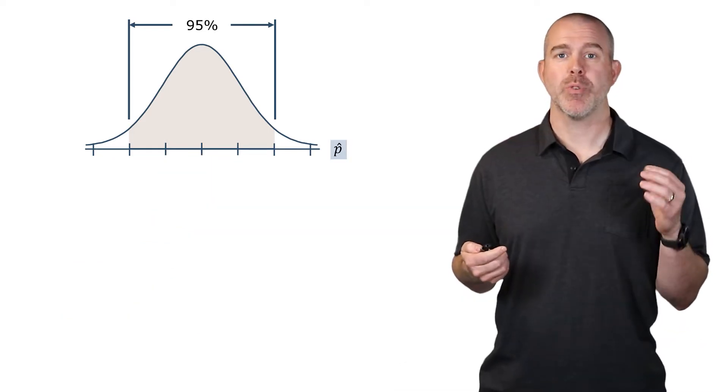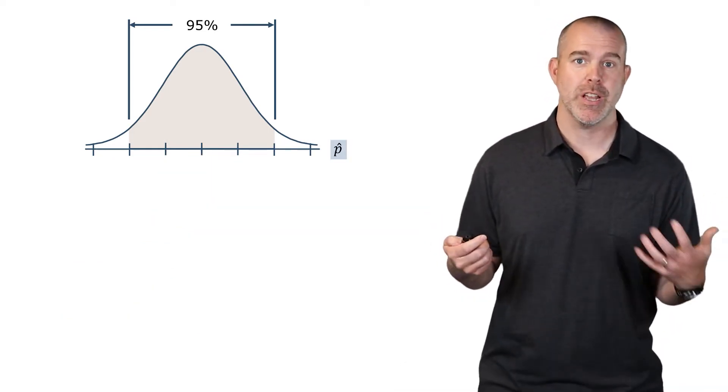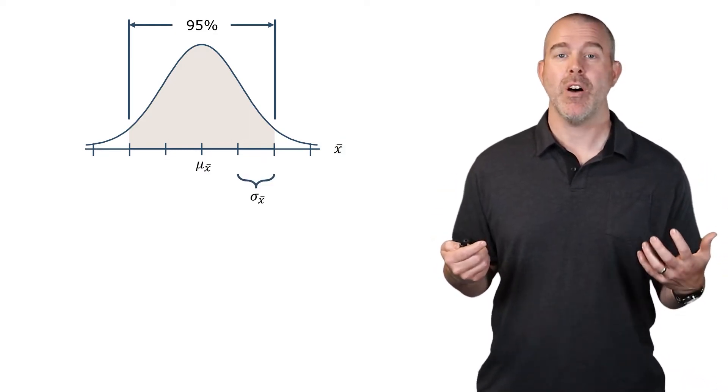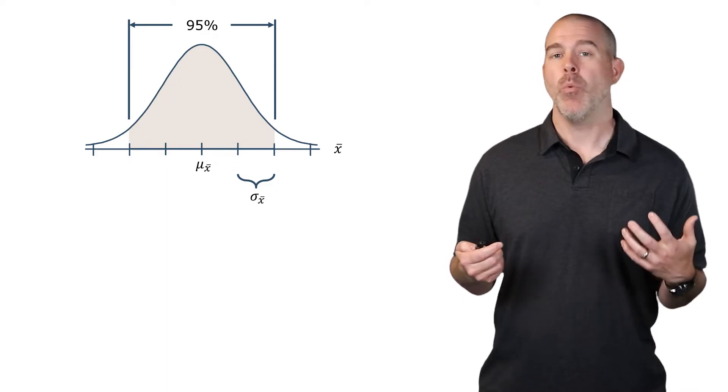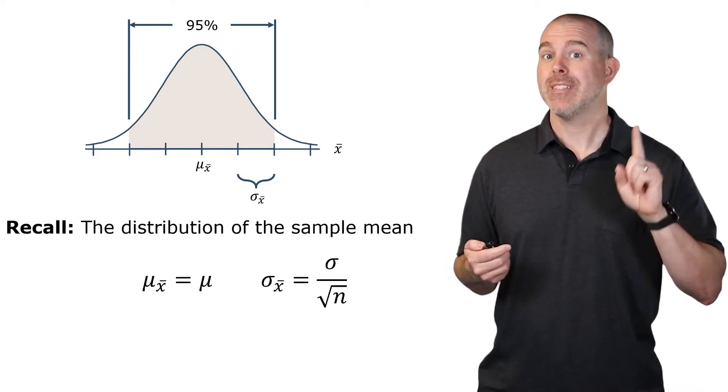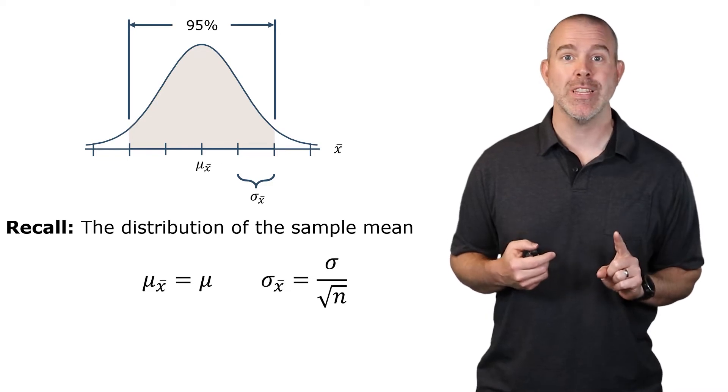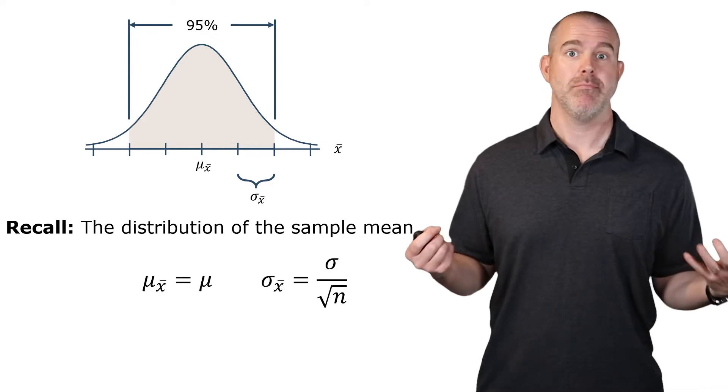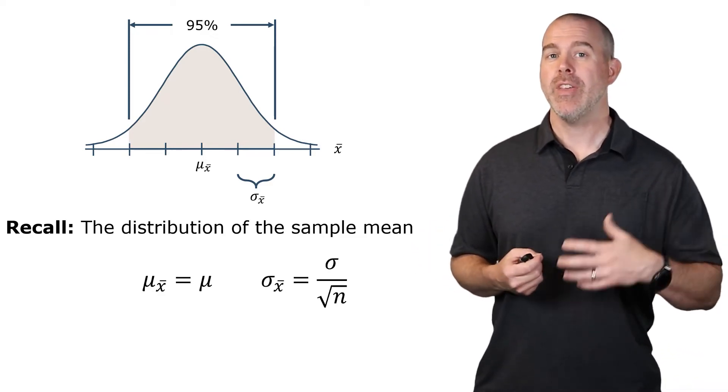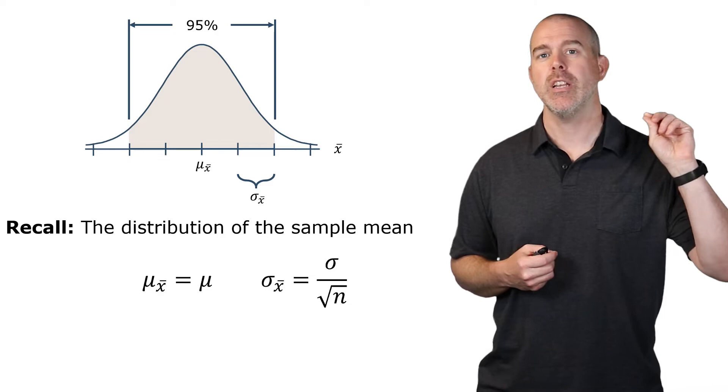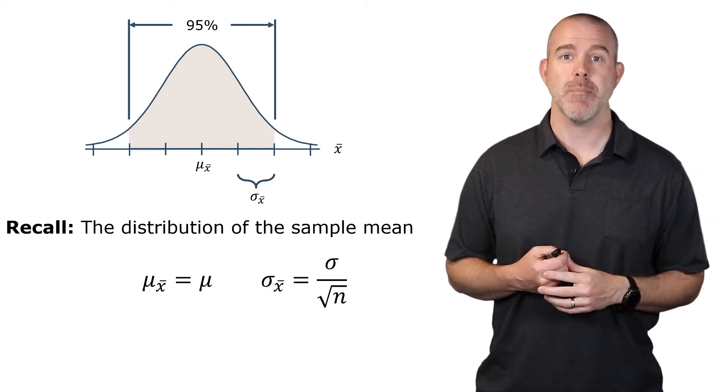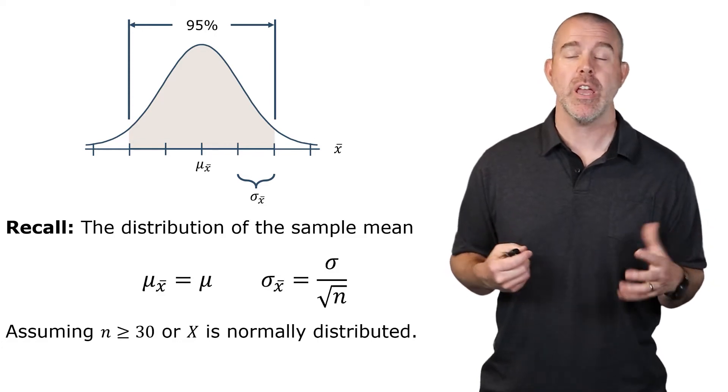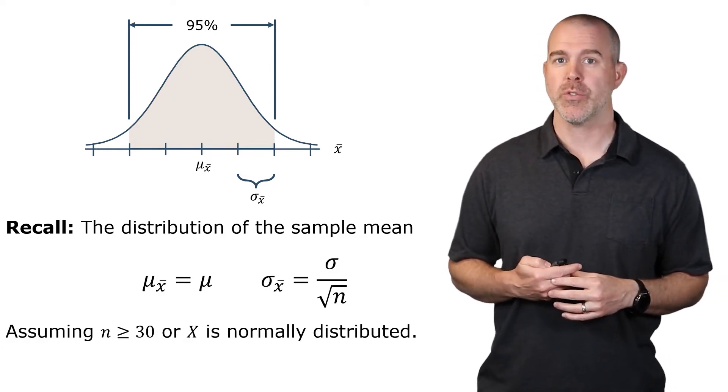Now this was for the population proportion. This is the distribution of the sample proportion. But we need the distribution of the sample mean. We need to know what is the mean of all the sample means that's in the middle, and what is the standard deviation. But we have studied this before. It's the central limit theorem. The mean of all the sample means should be the same as the population mean. And the standard deviation of the sample means is the standard deviation of the population divided by the square root of the sample size. Now this is always assuming that the sample size is pretty large, at least 30, or that the original variable is normally distributed.